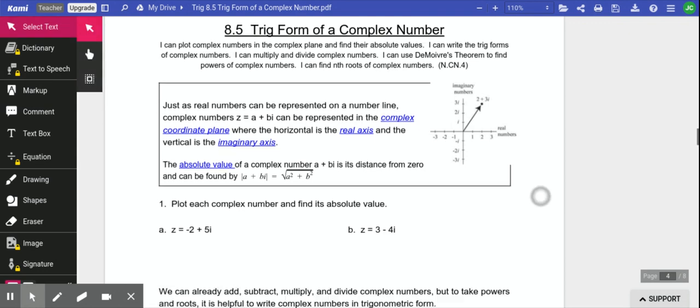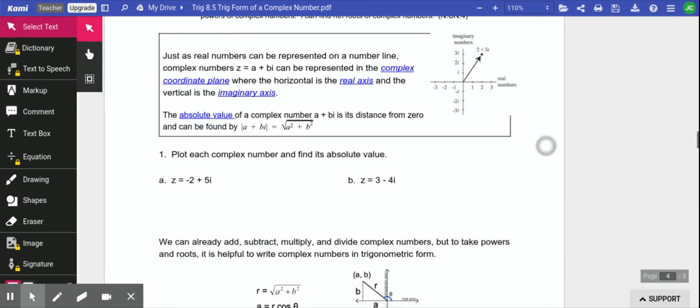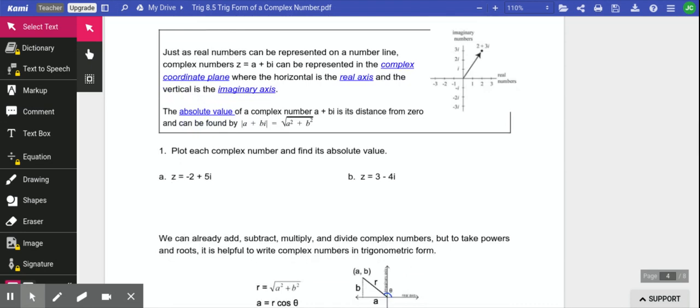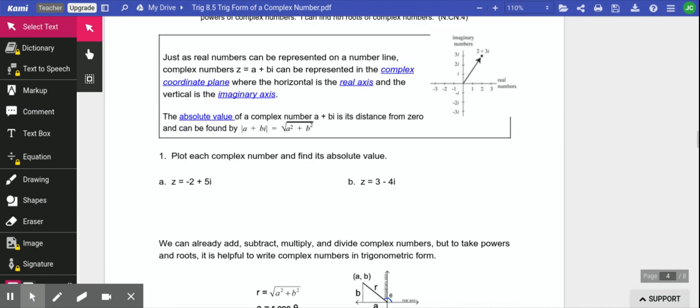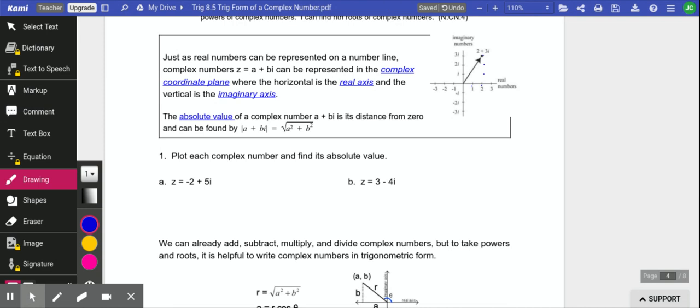What we just talked about is right here in your notes. We use a number line for real numbers, but if we want complex numbers, we need two axes. The x-axis is our real numbers, and the y-axis is our imaginary numbers. To graph the complex number 2 plus 3i, that's 2 in the real direction and 3 in the imaginary direction.